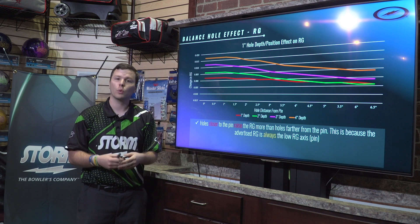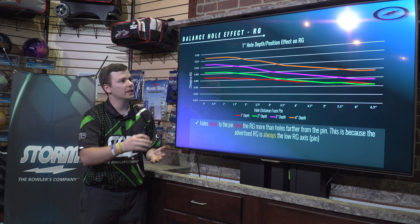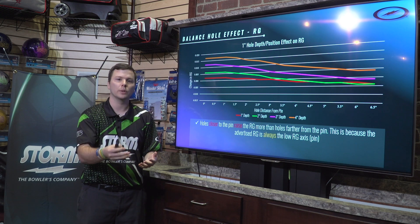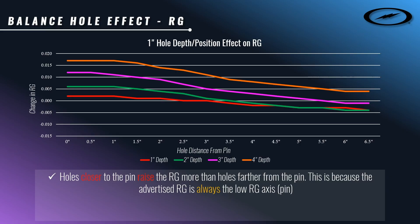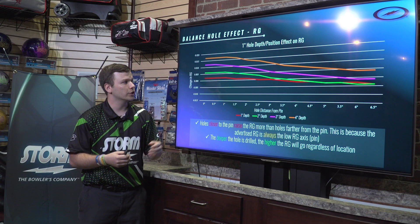We can see this on the graph because it starts very high on the left when close to the pin, and has a downward slope as we get further and further away from the pin. The next thing you'll notice is that the deeper the hole is drilled, the higher the RG goes, regardless of the location of the hole.